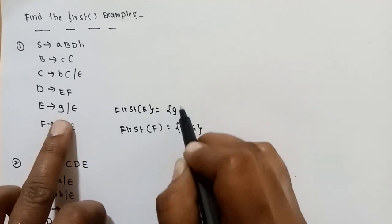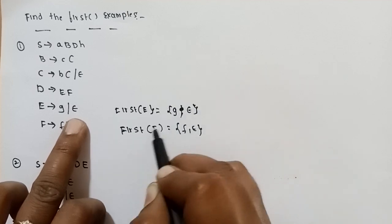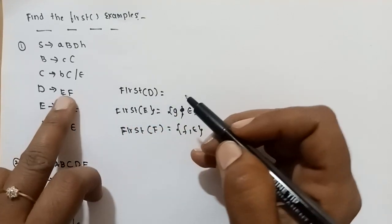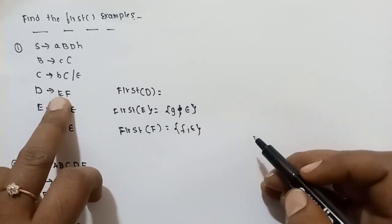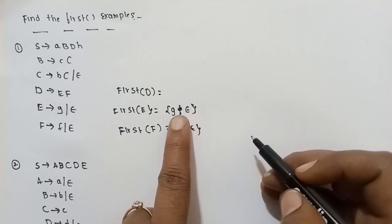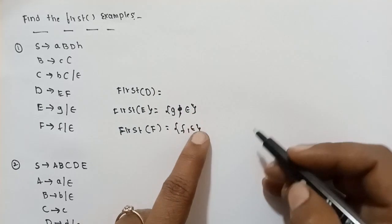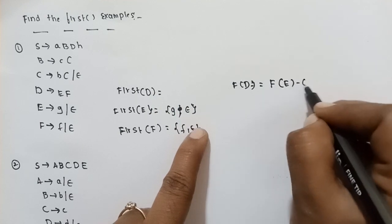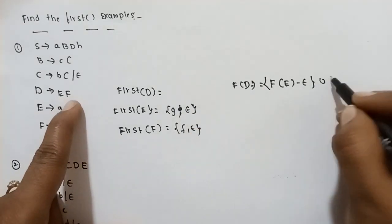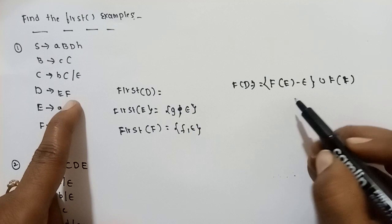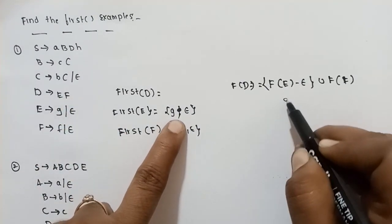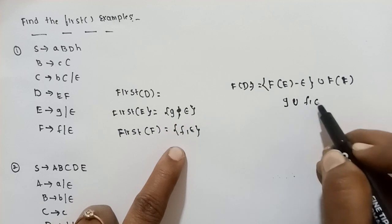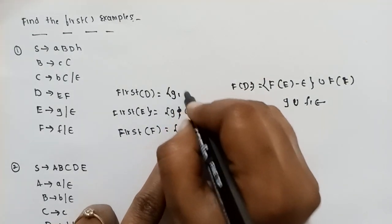Calculating First of E: there is a terminal G, so epsilon and G comma epsilon are in First of E. Next, First of D — First of D depends on First of E. Since epsilon is in First of E, we take First of E minus epsilon union First of F. So removing epsilon, we get G union First of F. Since F also has epsilon, First of D is calculated.